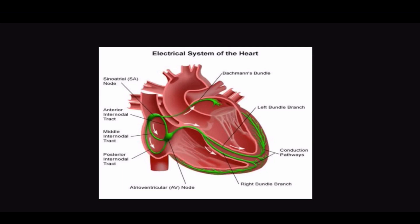This brings us to our cardiac conduction system. We start with the sinoatrial node, which is also called the SA node. This is our normal pacer — it paces the heart at 60 to 100 beats per minute. Our backup pacer is known as the atrioventricular node, or the AV node. It paces the heart at 40 to 60 beats per minute. There is a slight delay between the SA node and the AV node, and that is to allow time for the ventricles to fill with blood.